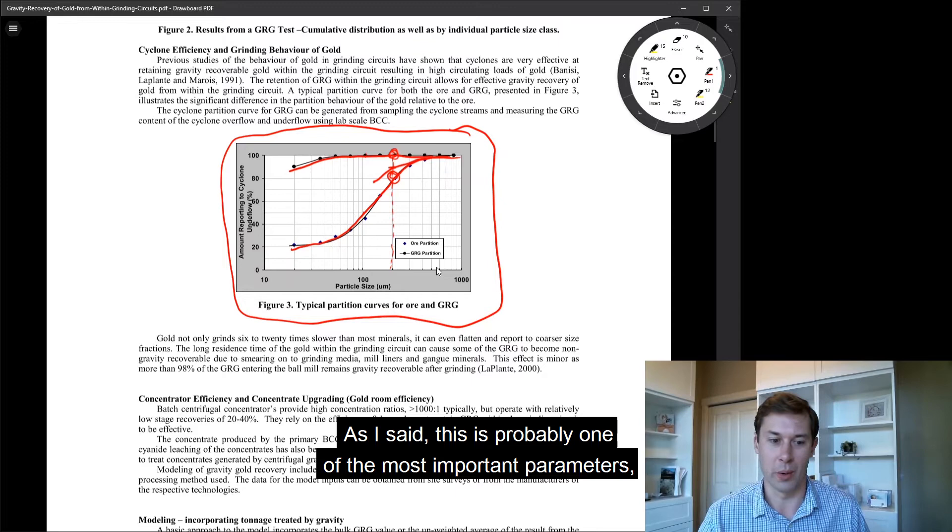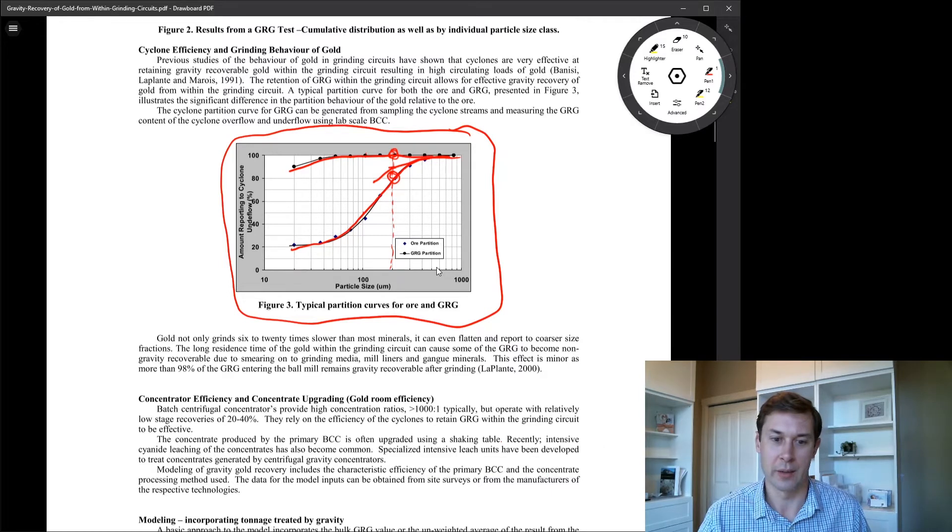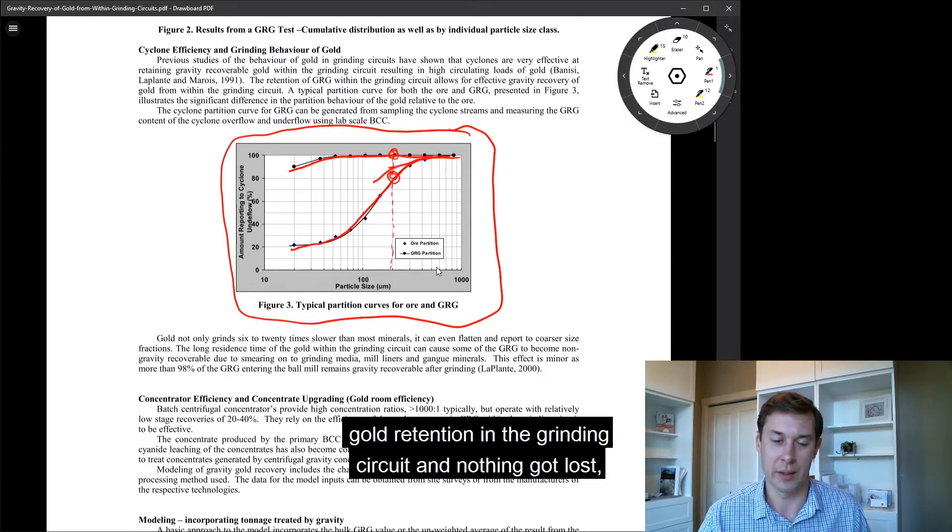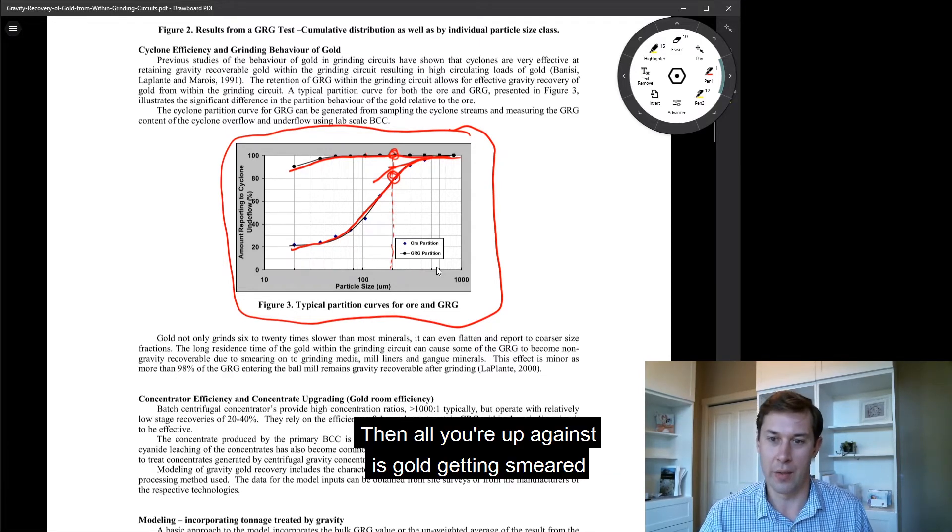This is probably one of the most important parameters because if you had 100% gold retention in the grinding circuit and nothing got lost, then it really wouldn't matter how efficient the gravity concentrator is.